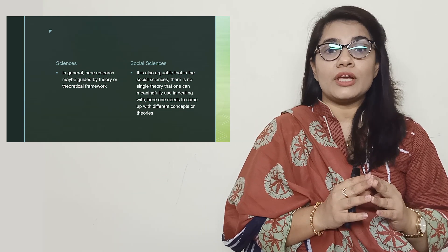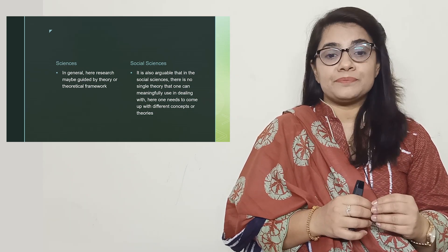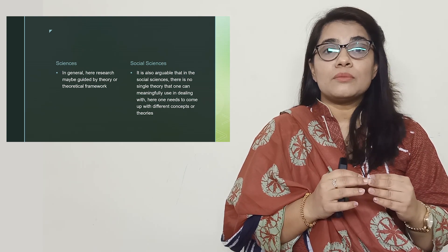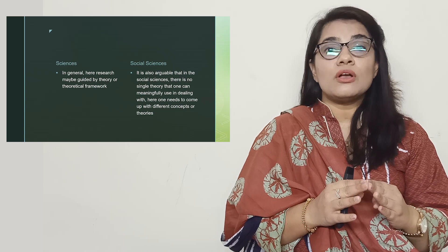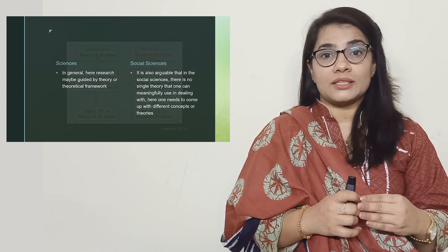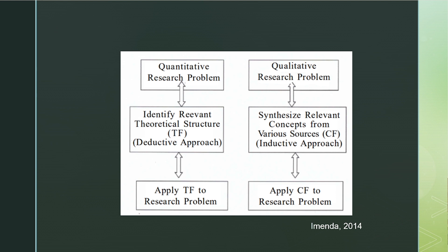In sciences, it is generally agreeable that research questions and studies are based on theoretical frameworks or theories. On the other hand, in social sciences, it is arguable that there is no single theory that can meaningfully cover one aspect, so we need to develop a conceptual framework — a mix of different theories, concepts, or empirical findings. This diagram shows that in quantitative research problems we identify theoretical frameworks which led to our research problem, while in qualitative research we usually develop conceptual frameworks because we need to cover different aspects, empirical findings, and models or theories to develop our research questions.